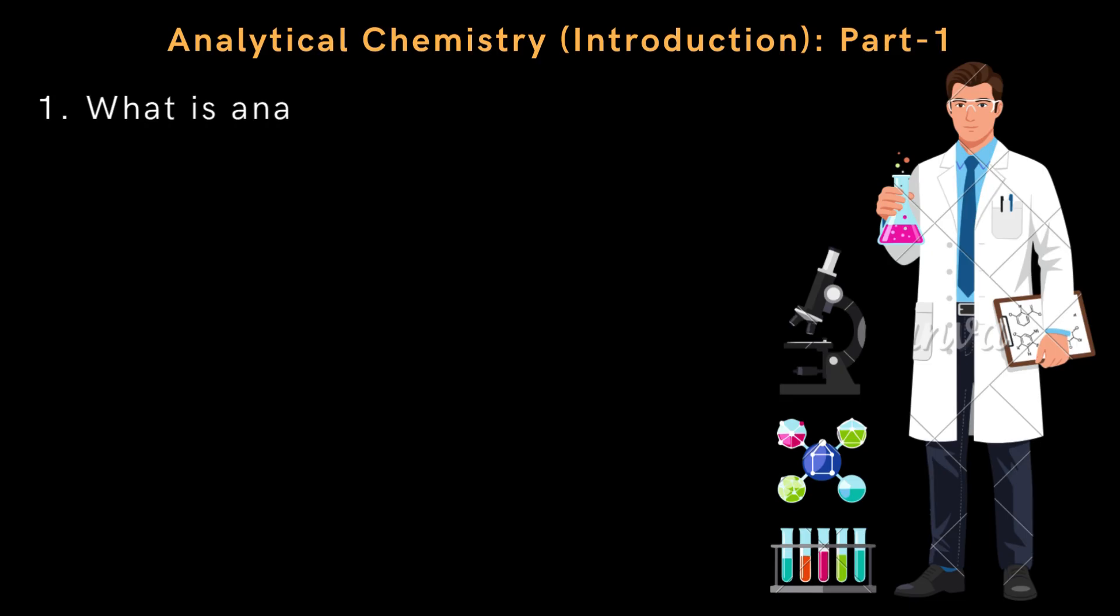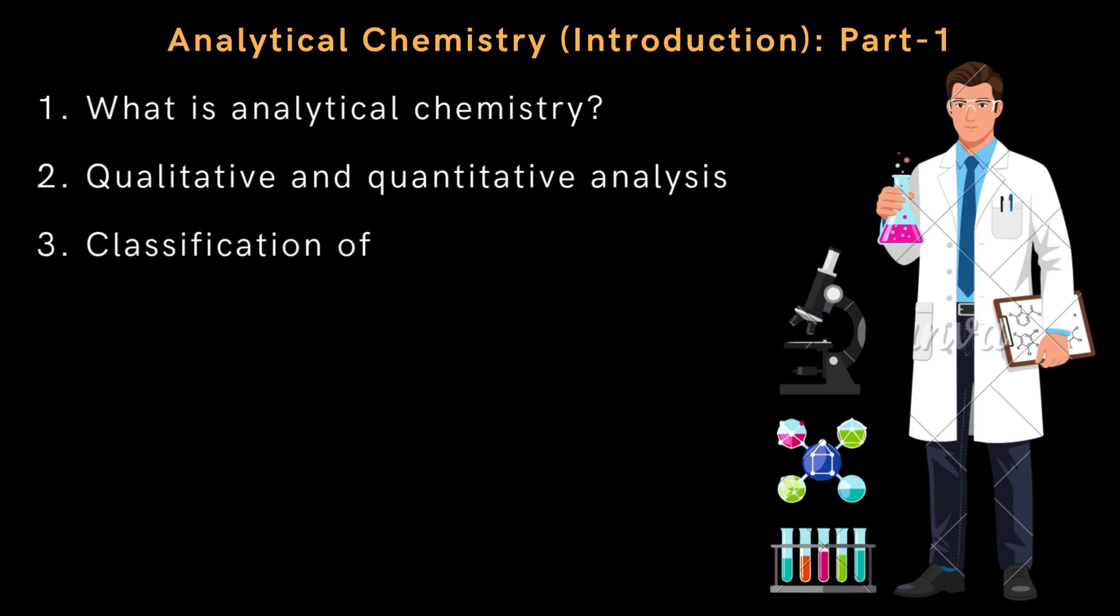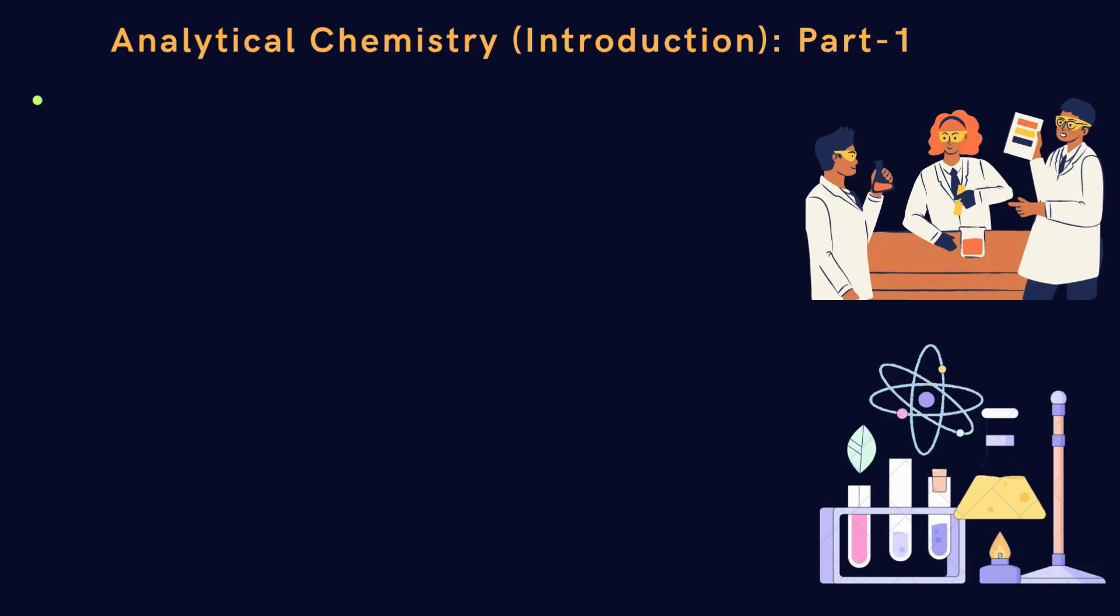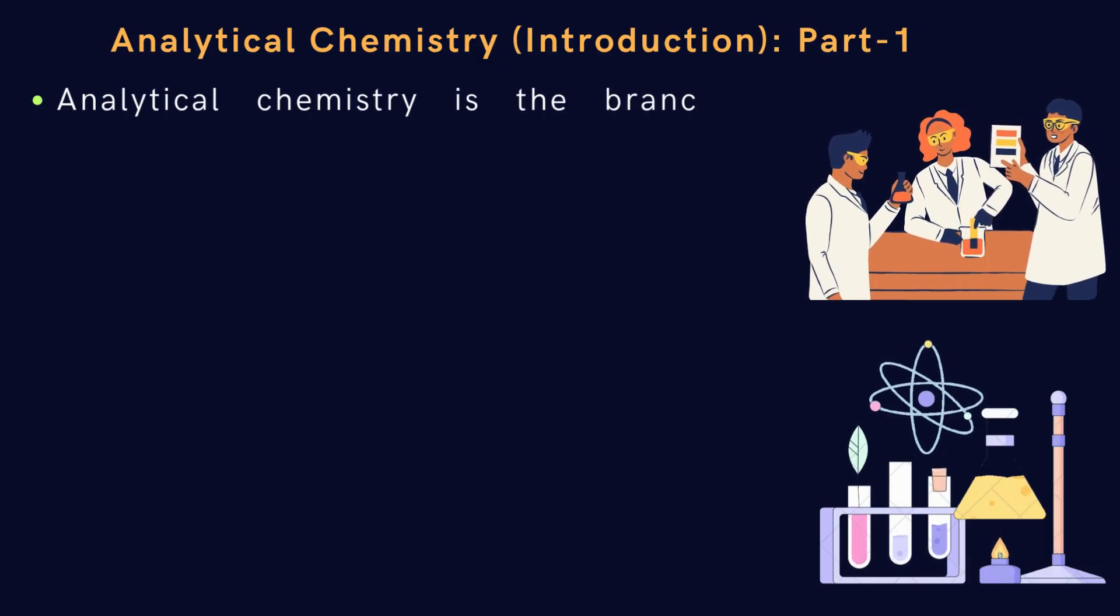In this first part of analytical chemistry, the introduction section consists of what is analytical chemistry, qualitative and quantitative analysis, classification of analytical methods, factors affecting the choice of analytical method or steps in selection of method, and finally we will see the scope of analytical chemistry.